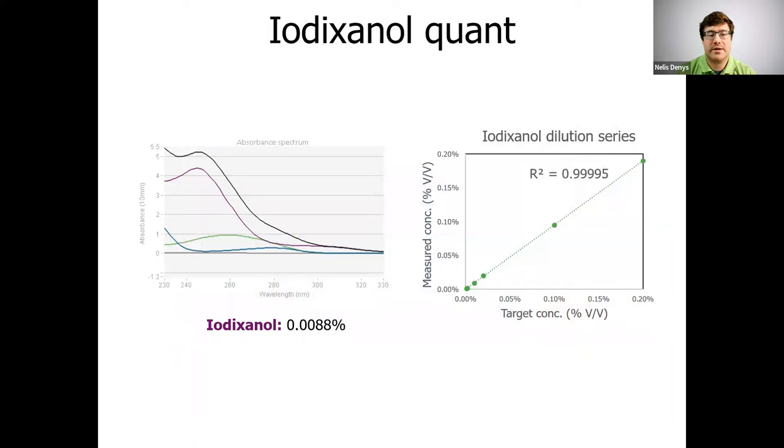Now, if you're working with iodixinol in your process developing and purifying AAVs, it's useful to know exactly how much iodixinol is in your sample and to check on the iodixinol concentration after each buffer exchange if you want to get rid of it. Stunner will help you out here as well and will detect iodixinol in your sample as low as 0.0005% by volume.